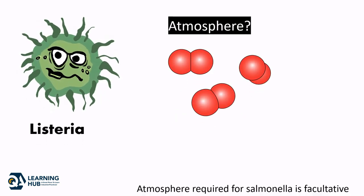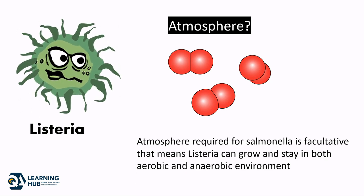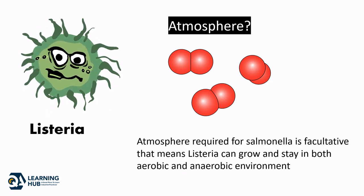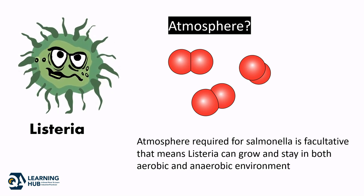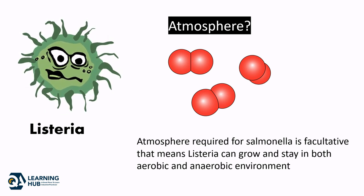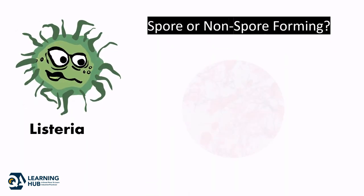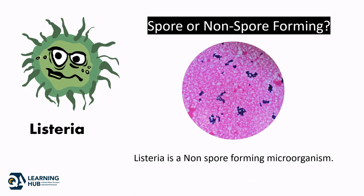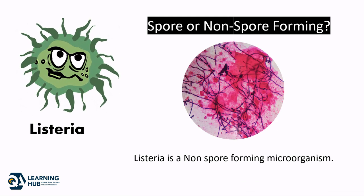Atmosphere: The atmosphere required for Listeria is facultative, meaning Listeria can grow and survive in both aerobic and anaerobic environments. Spore forming: Listeria is a non-spore-forming microorganism.